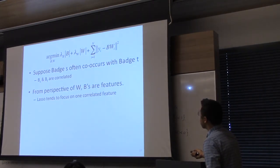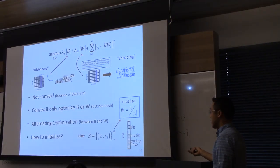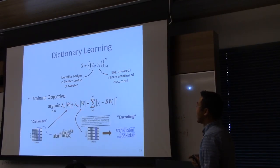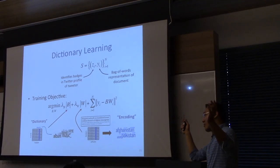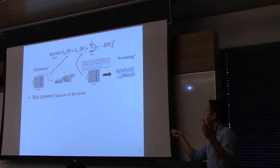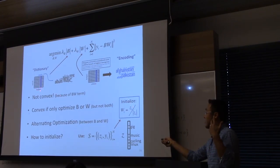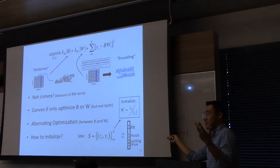The main difference from standard dimensionality reduction is the initialization using badges. In normal dimensionality reduction, we don't have Z — we just have Y and solve the optimization. Here we have a badge representation of users who tweeted each article. So we set the number of latent factor dimensions equal to the number of unique badges, and we initialize the article encodings by the average of the badges of the Twitter users who tweeted that article. Otherwise it's exactly the same as latent factor models from the homework.